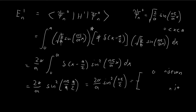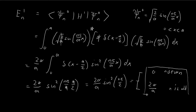When n is odd — say n = 1, 3, 5, 7, etc. — you get terms like 3π/2, and for an odd number divided by 2 times π, the sine term is just ±1. Since we're squaring it, this becomes 1 when n is odd. So we just have 2α/a when n is odd. This is how you find the first order correction to the energy levels.